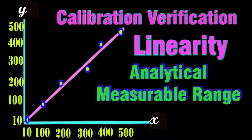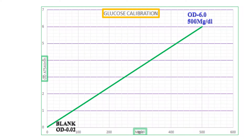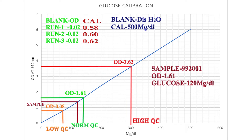Calibration is the process of establishing a correlation between the measurement signal generated by an instrument and the true concentration of analyte in the calibrator. Calibration is setting the analyzer with the reference point so that patient samples are compared to produce test results. Simply, it is telling the instrument how to read analyte concentration from the patient samples.